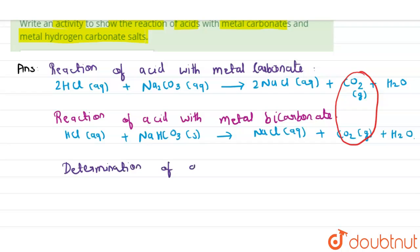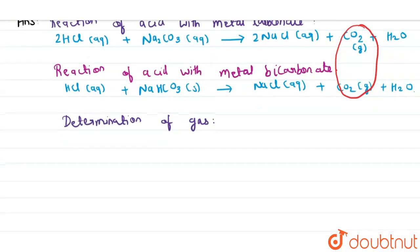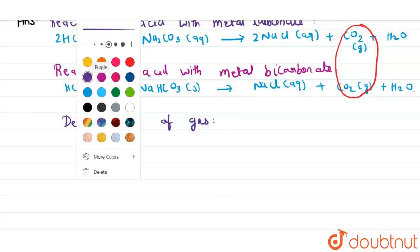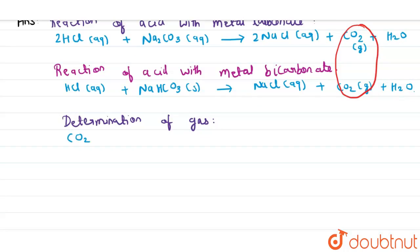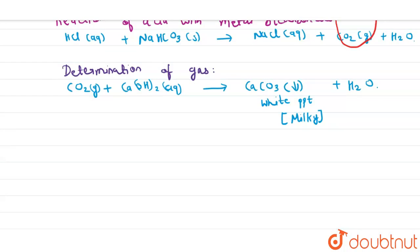Determination of gas: What we do basically is we pass carbon dioxide through the lime water solution. So what happens first is the formation of calcium carbonate takes place which is a white precipitate which turns lime water milky.